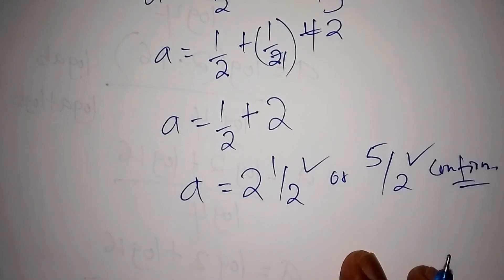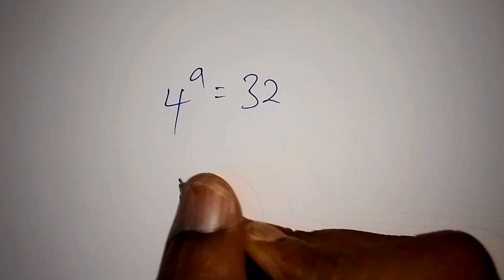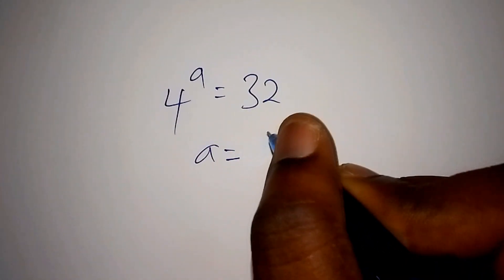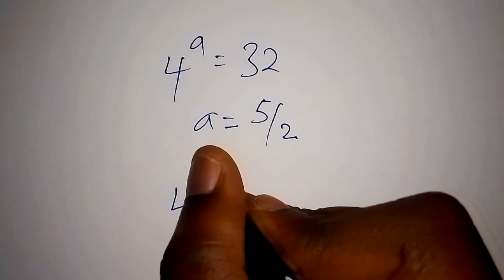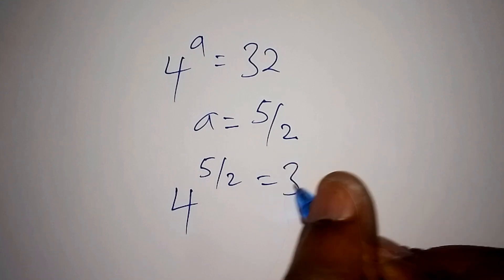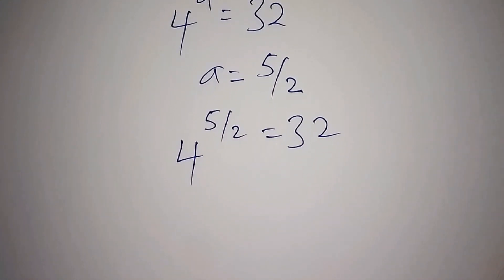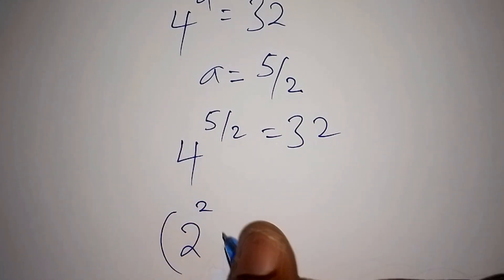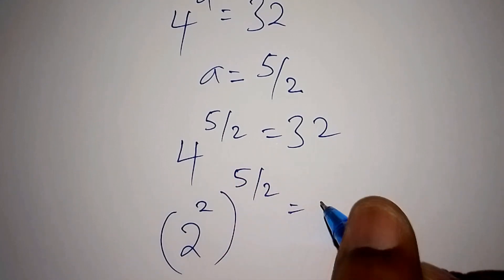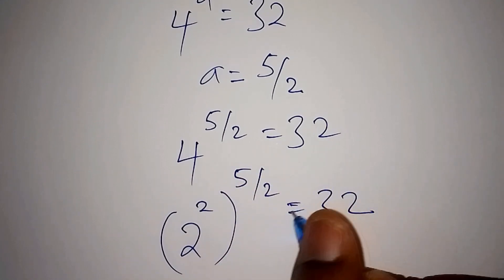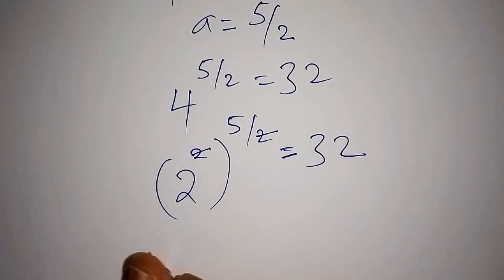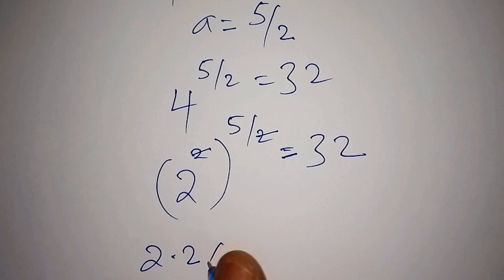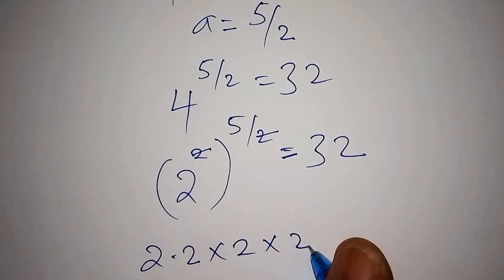So what we had was 4 to the power of a is equals to 32, and our a we got as 5 over 2. We write it by now having 4 to the power of 5 over 2 is equals to 32. We can write this as 2 to the power of 2, then into bracket 5 over 2 is equals to 32. So here now 2 by 2 shall cancel, and we shall have 2 to the power of 5.